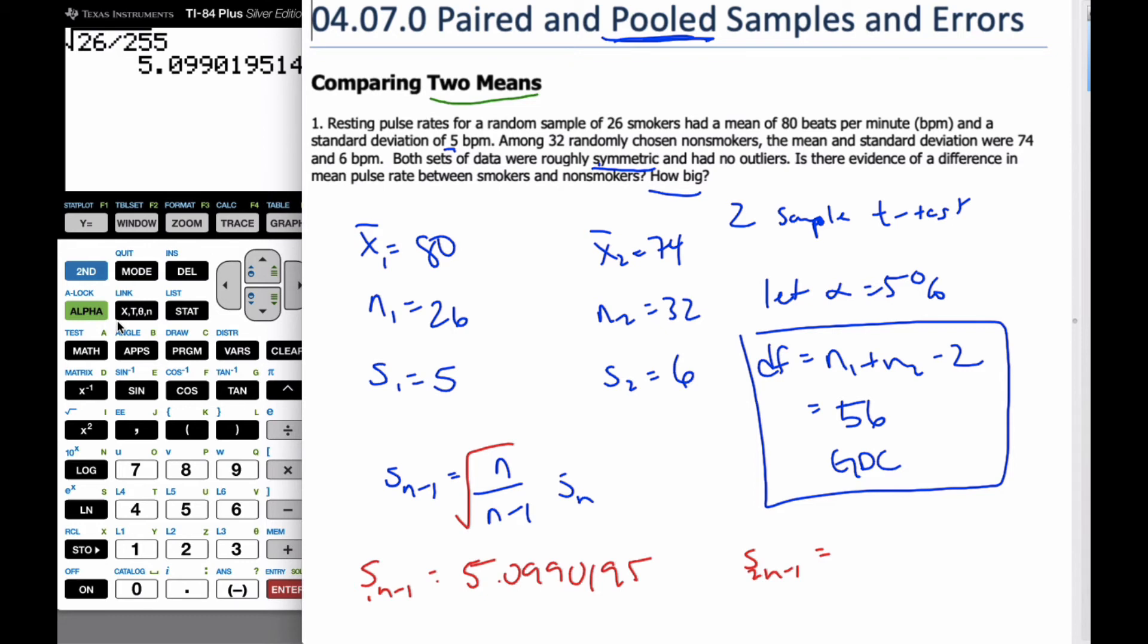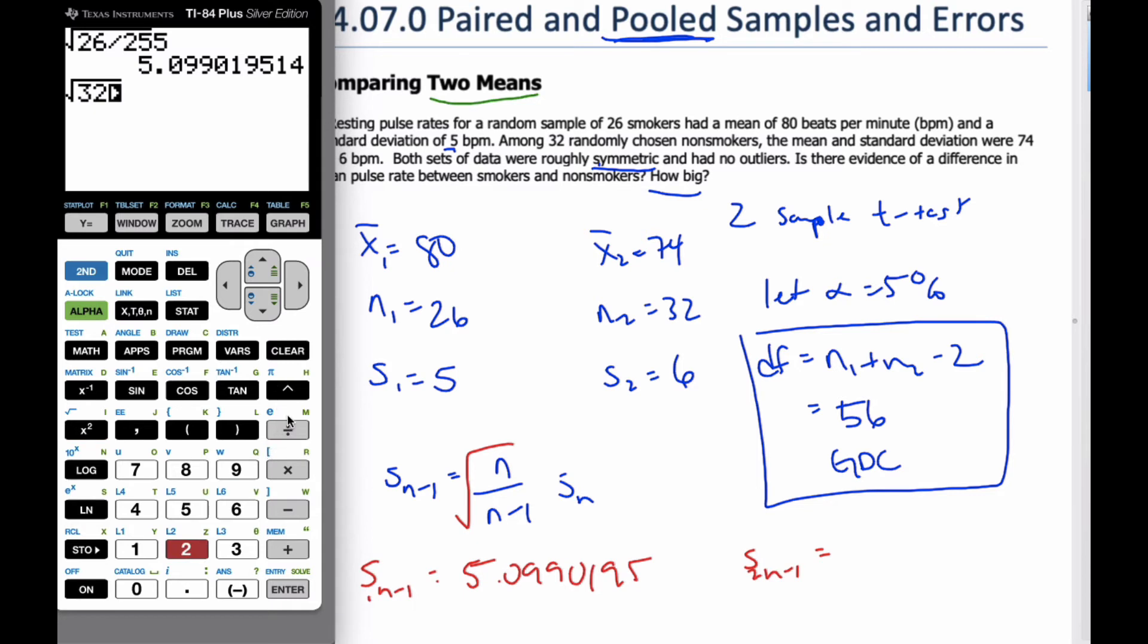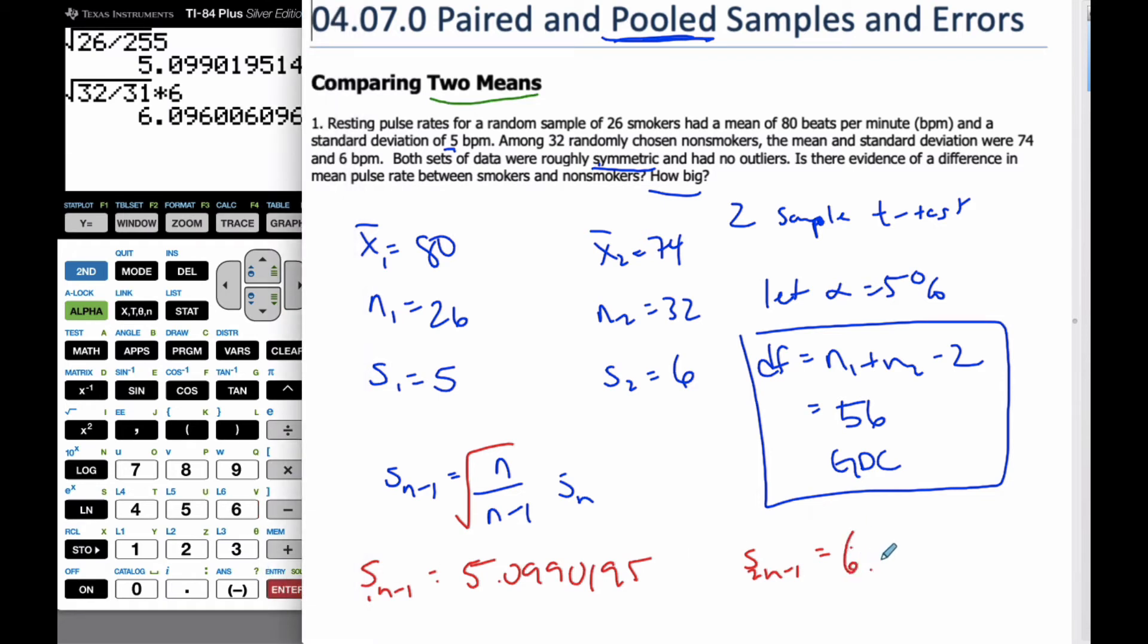And for the other one, s2 is going to be similar, square root of 32 divided by 31, which is n minus 1, come out of the parentheses and times it by 6. Now I get 6.096006.